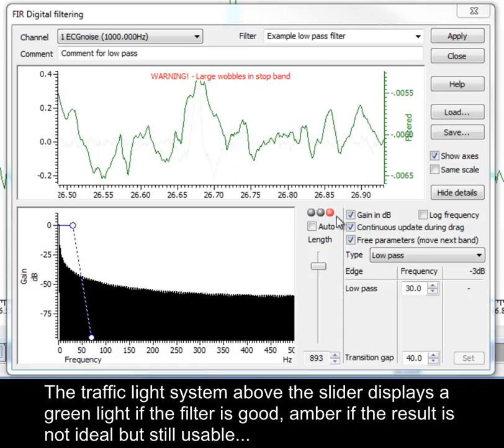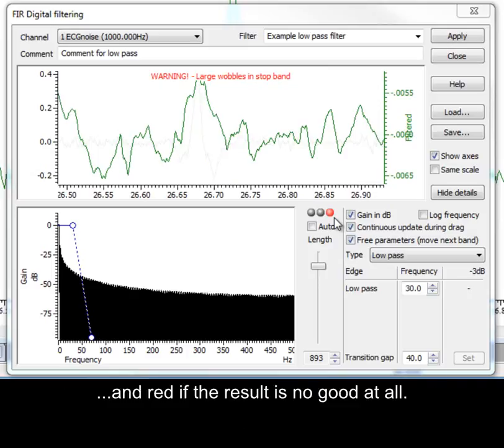The traffic light system above the slider displays a green light if the filter is good, amber if the result is not ideal but still usable, and red if the result is no good at all.